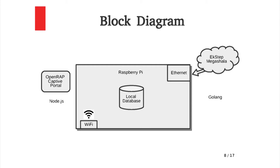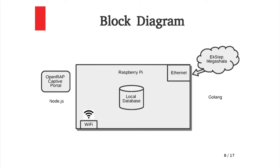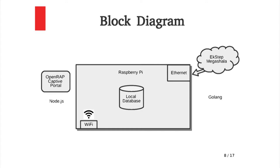To expand on the working of OpenWrap: the software runs on top of a Linux-based image on the Raspberry Pi. As the device is powered on, it acts as a hotspot and serves a captive portal — a default webpage you can interact with. End user functionality is handled by Node.js. The local database stores basic user details like attendance records, admin panel permissions, and offline course content. The OpenWrap device connects to the internet via the ethernet port to fetch course content from websites like Ekstep and Megashala, using plugins written in Golang.